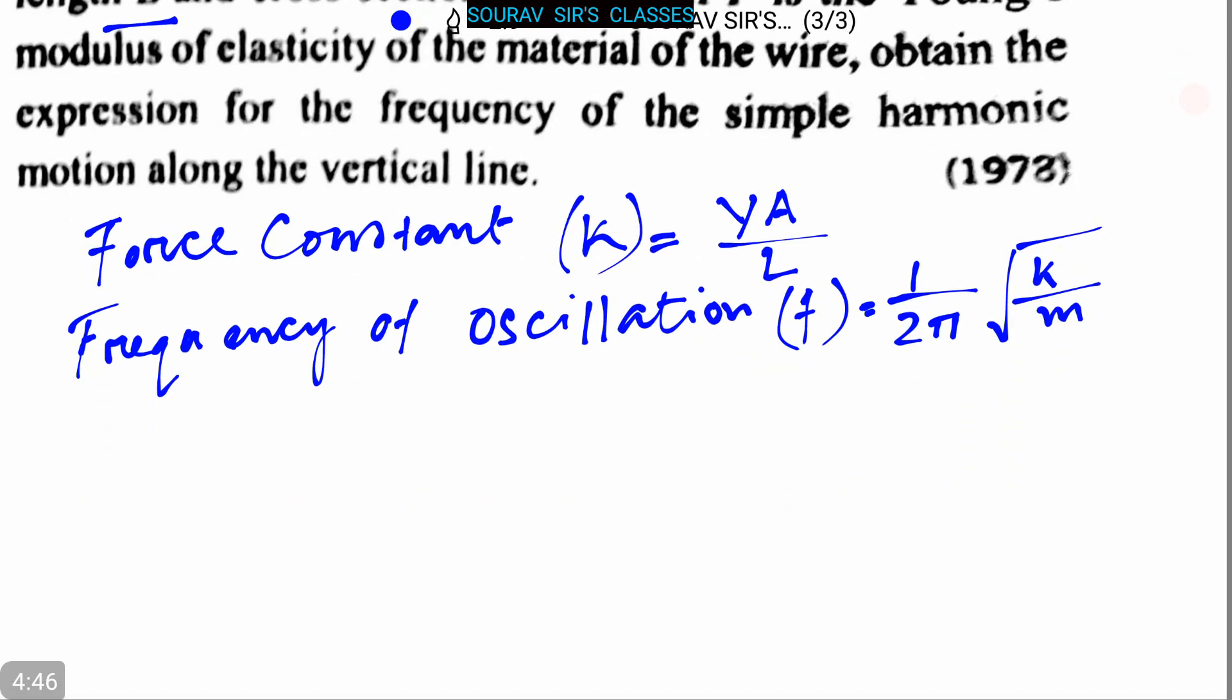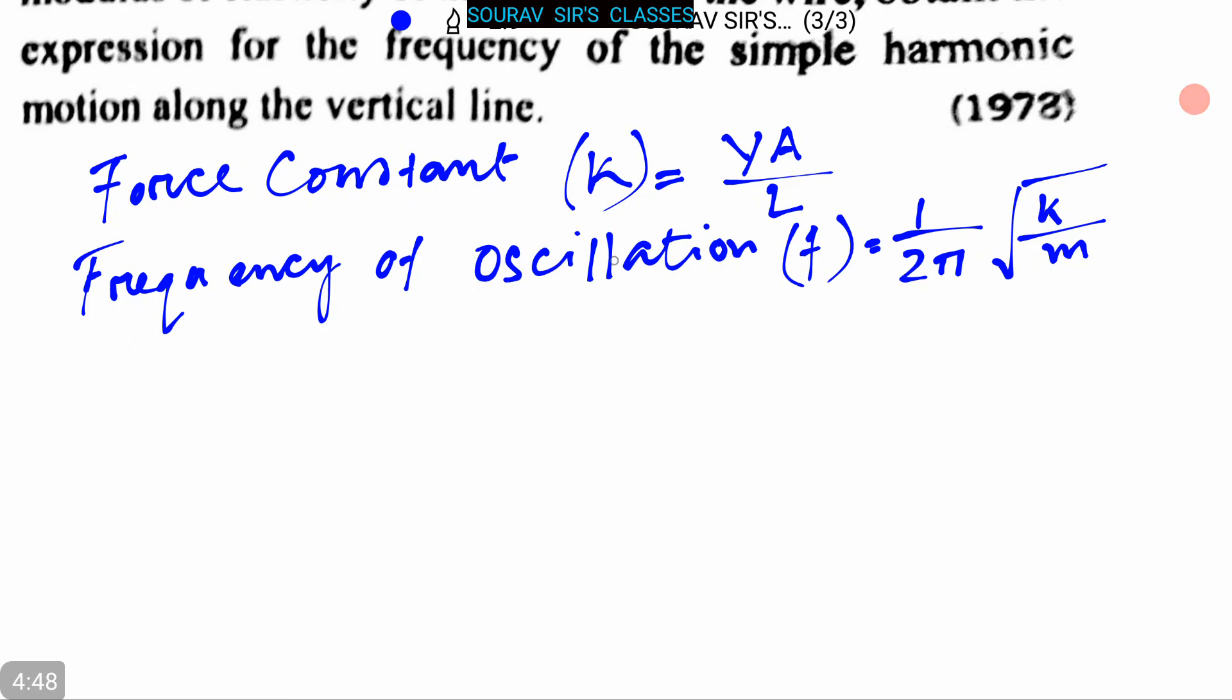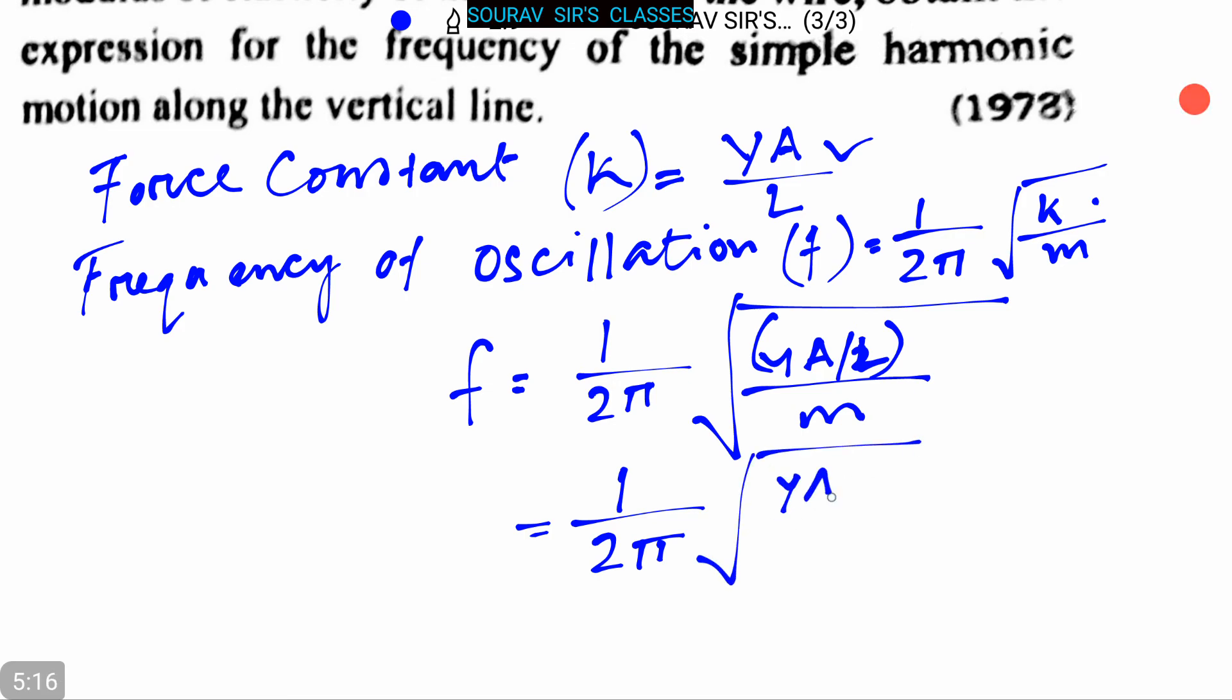Now we can write that f = 1/(2π), we're putting the value of k here, √(YA/L)/m = 1/(2π)√(YA/mL).